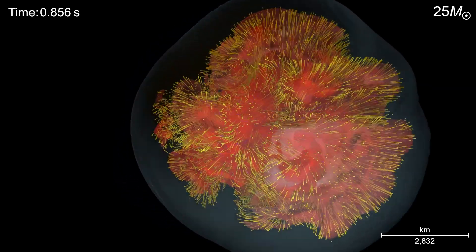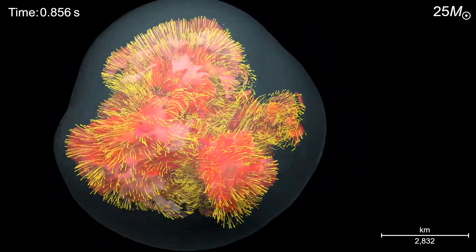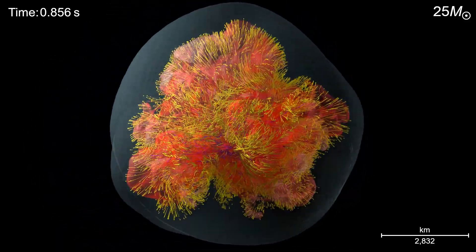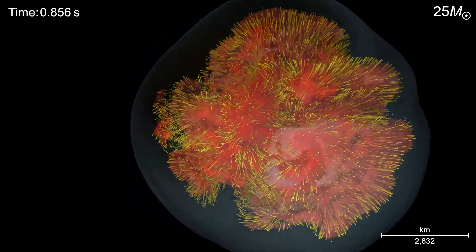The result is a very dynamic explosion, which is aspherical and asymmetrical. While the explosion is ejecting material outward in one direction, accretion of material is falling back in another.